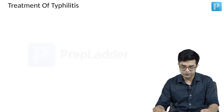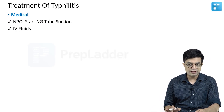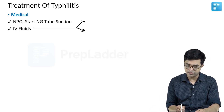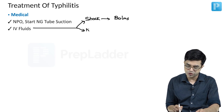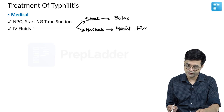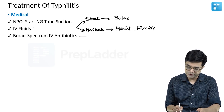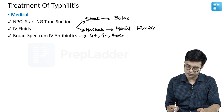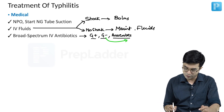How are you going to treat Tiflitis? First is medical management. Make the patient NPO and start NG tube suction. IV fluids will be started — if the patient presents with shock, give bolus IV fluids; if there is no shock, start maintenance fluids. Then start broad-spectrum IV antibiotics covering gram-positive bacteria, gram-negative bacteria, as well as anaerobes. Pseudomonal coverage is also recommended since Pseudomonas is common.